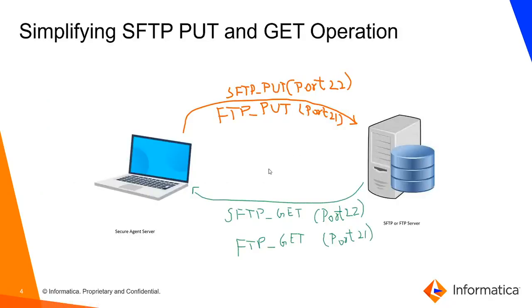Let's simplify the SFTP put and get operations. The SFTP put operation is when we are moving files from the local agent server to the FTP server. Depending on your server, if the server communicates over port 22 securely, that would be an SFTP put operation. Whereas if your server does not support SFTP and supports FTP over port 21, that would be an FTP put operation.